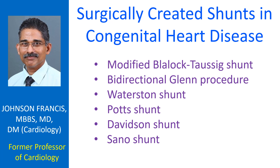Sano shunt uses an extracardiac valved conduit directly from the right ventricle to the pulmonary artery. Sano shunt avoids the reduced diastolic blood flow in the coronary circulation which can be associated with Blalock-Taussig shunt.